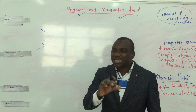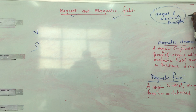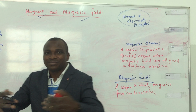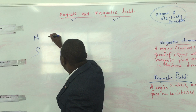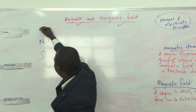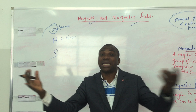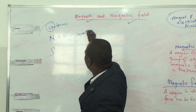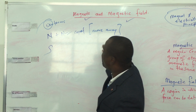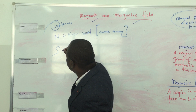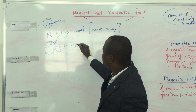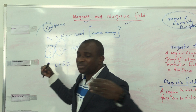N is the north pole and S is the south pole. In the general principle, when the north pole and north pole are joined together, we call it like poles — like means the same. When north and north are combined together, they repel. Repel means move away from each other. The same thing when south and south come together — because they are of the same identity, they repel. But when north and south come in contact, then they attract.